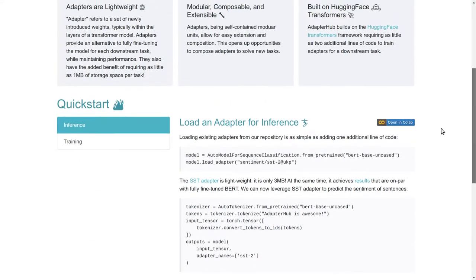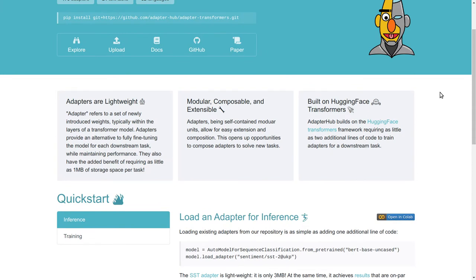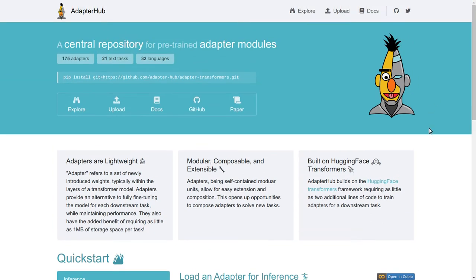There's 175 adapters released on 21 tasks and 32 languages. So it's a good starting point if you want to use those adapter models and fine-tune them on new tasks or languages.